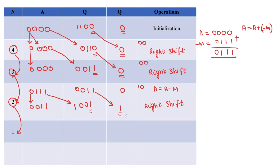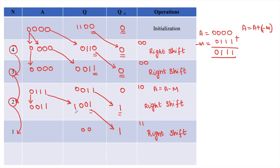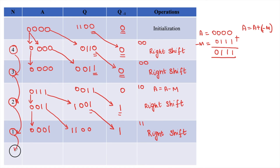Checking Q naught and Q minus 1 — the combination is now 1,1. When both bits are 1,1, we just perform arithmetic right shift as per the flowchart. We shift: Q1 becomes Q minus 1, write the remaining 3 bits 001, the 4th bit from A becomes 1. A has remaining bits 100, and we copy the sign bit giving 1100. N reduces from 1 to 0. N equals 0, so we stop the iterations.